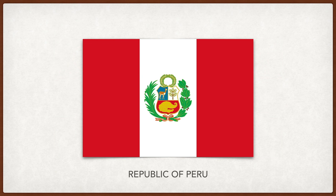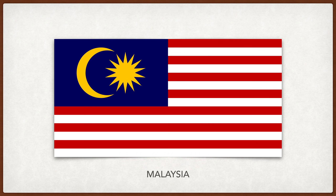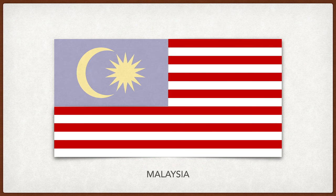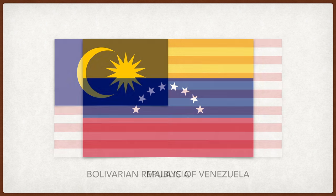Peru. Like many other countries, the red represents the blood spilled for independence, and white represents peace. The coat of arms in the middle pictures various national symbols, like the vicuña, a relative of the llama. The tree represents the country's fauna, and the yellow cornucopia represents the country's mineral wealth. Malaysia. The 14 stripes represent the equality among the states, and the 14-point star represents their unity. The crescent represents Islam, and the yellow is the royal colors of the rulers of Malaysia.